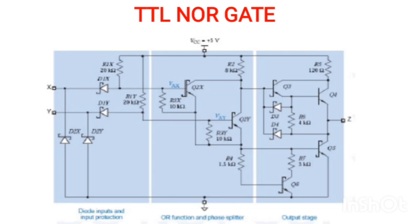Schottky transistors and Schottky diodes are used to reduce saturation delay and increase fast operation. For the case x=0, y=0: diodes D1x and D1y will both be forward biased because VCC is directly connected to the anode and the cathode is connected to the inputs, which are zero — so anode is greater than cathode. At the same time, D2x and D2y will also be forward biased because x and y are zero, so the anode connected to ground is higher compared to the cathode.